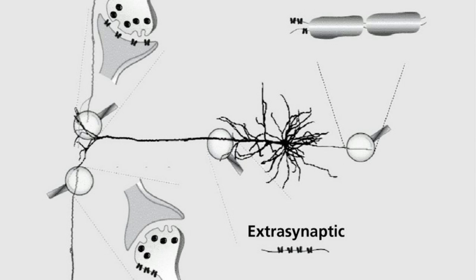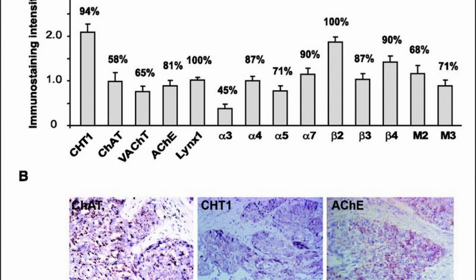Difference between Muscarinic and Nicotinic Receptors. In many animal forms, may it be insects or mammals, a nervous system is present. The reason for such occurrence is to maintain connectivity among various types of tissues and also to respond to external stimuli accordingly.